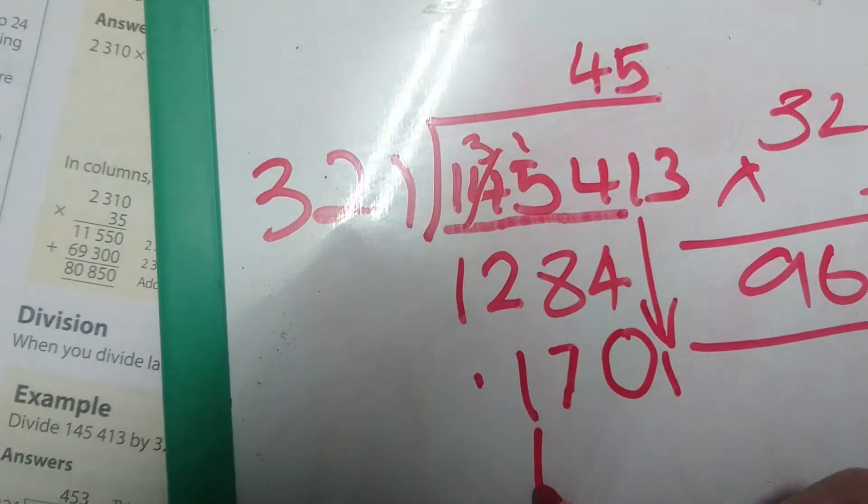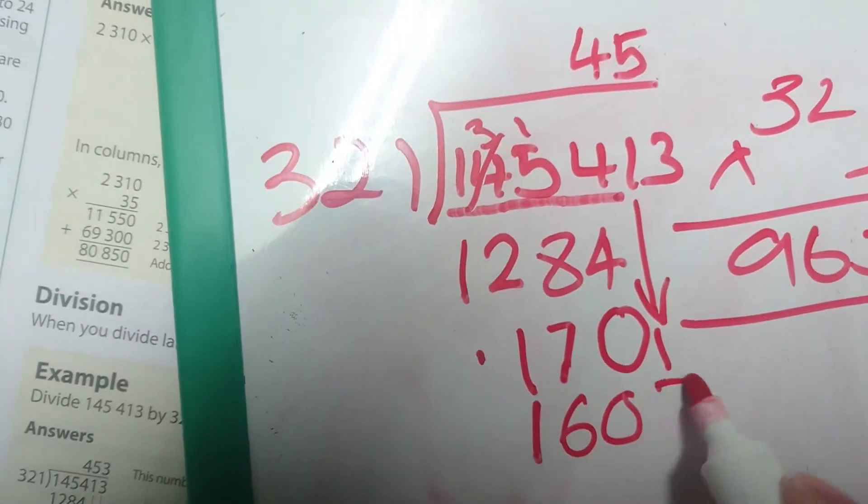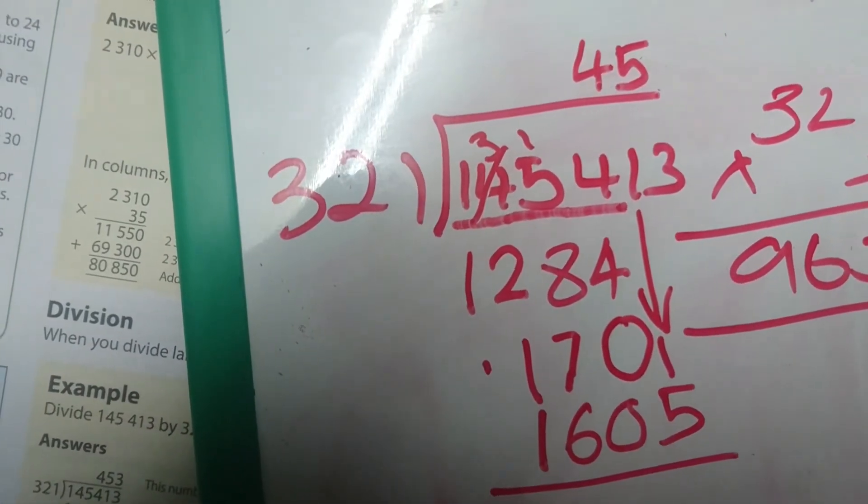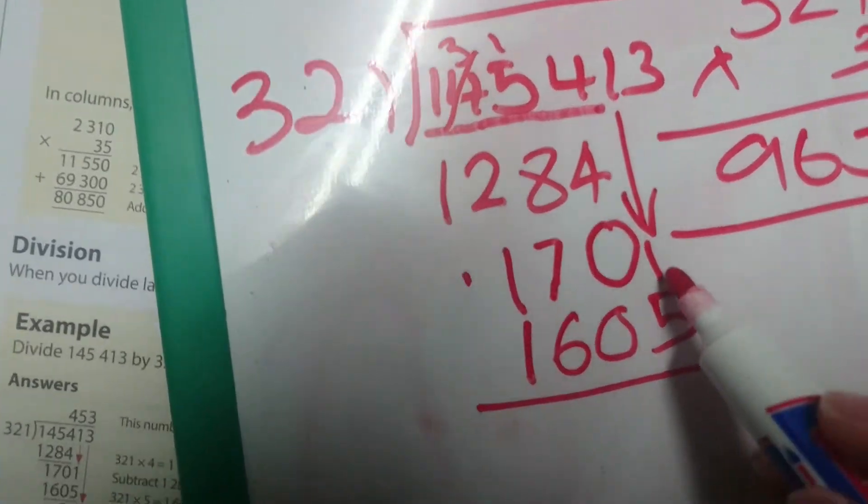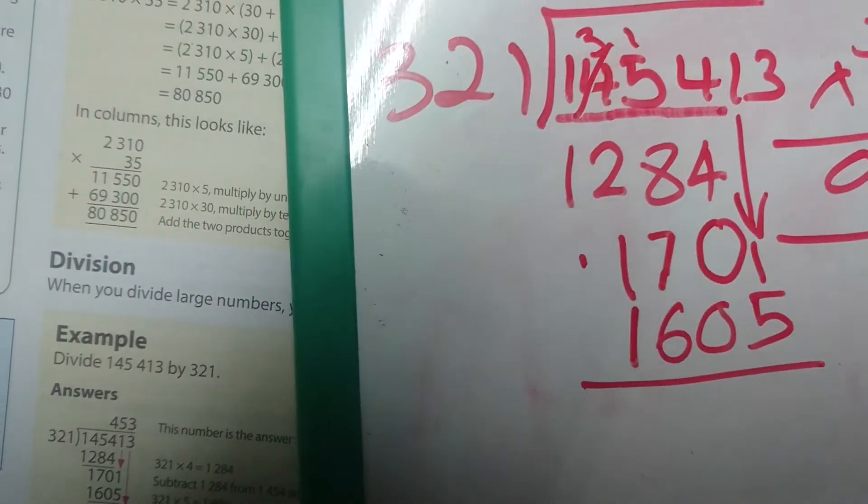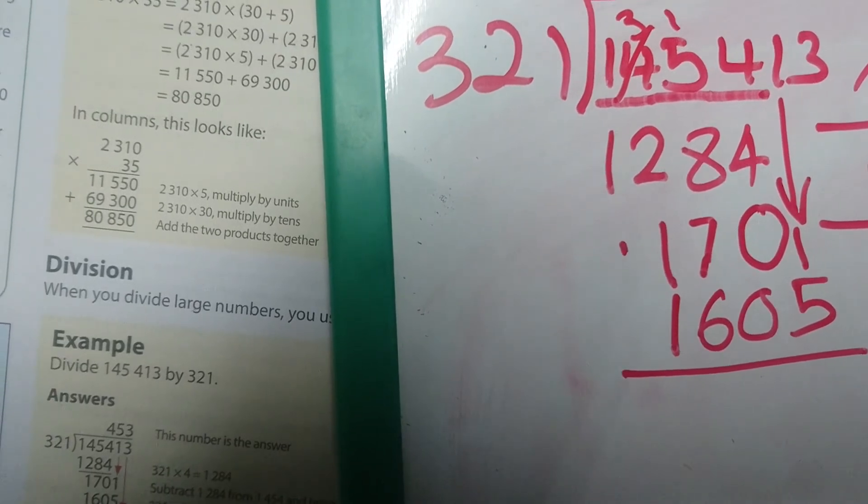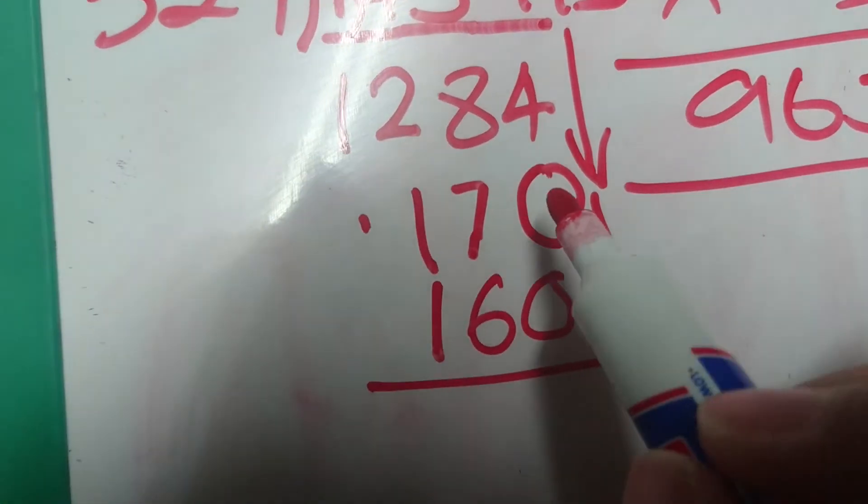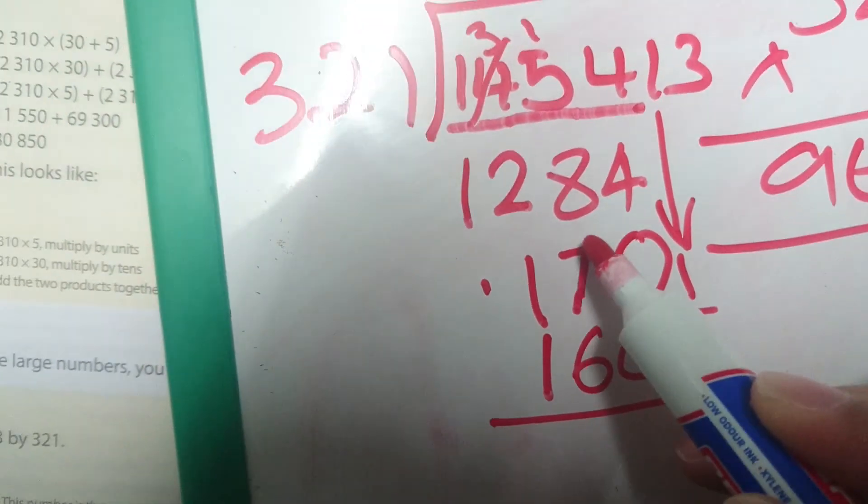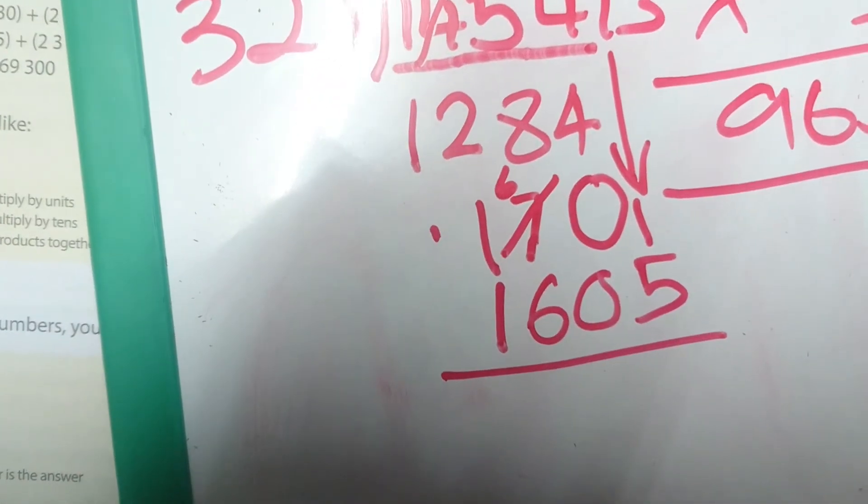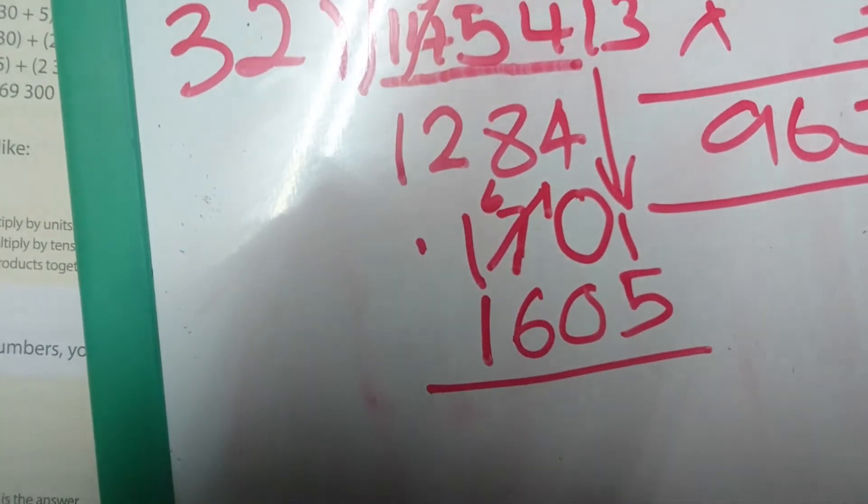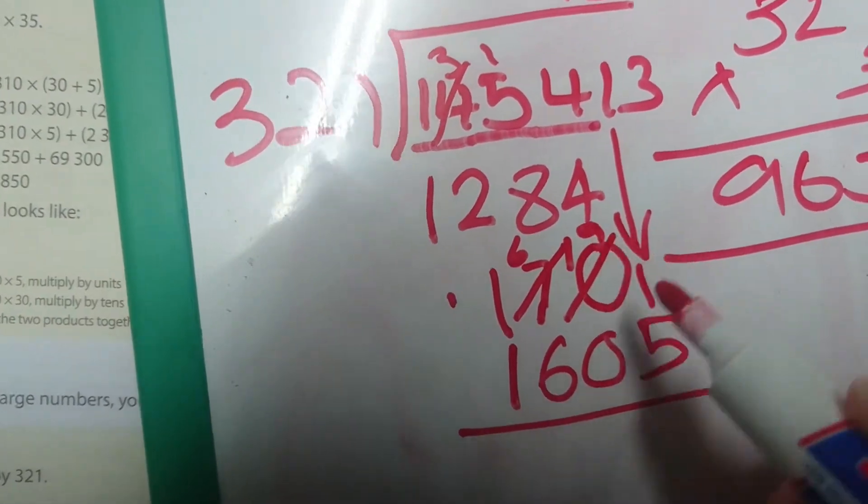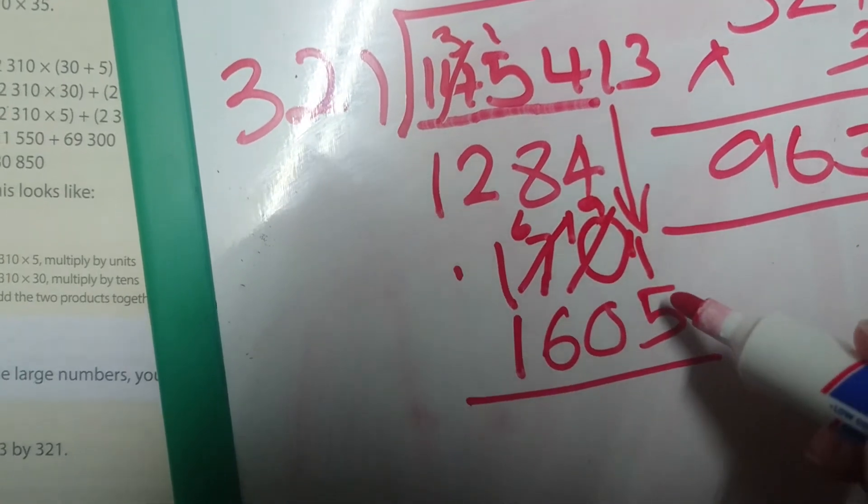So we are going to put our 1,605 down below and we are going to subtract. 1 minus 5, 1 cannot minus 5, therefore we are going to borrow. We cannot borrow from the 0 because it is too small, therefore we need to borrow from the 7. So the 7 is going to become 6, and the 0 is going to become 10. Now we can borrow from the 10. That 10 is going to become 9, and this is going to become 11.